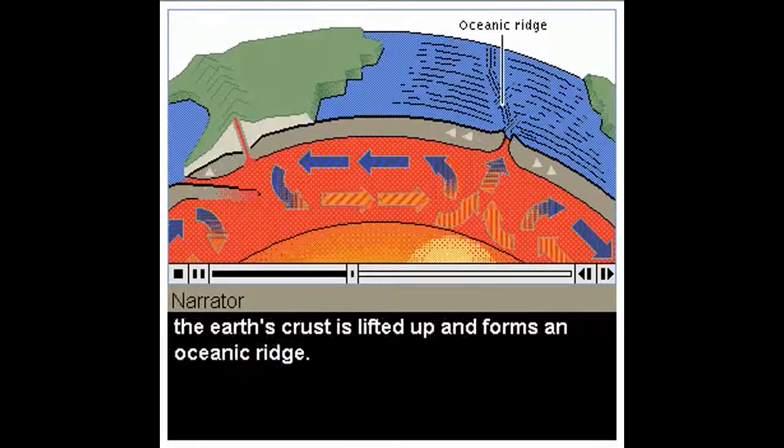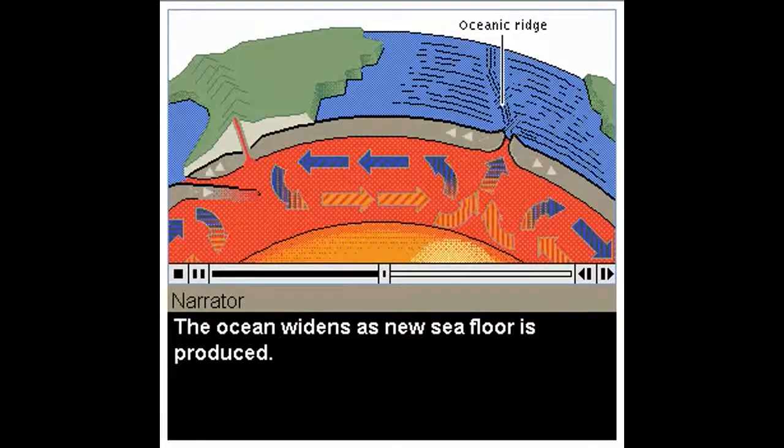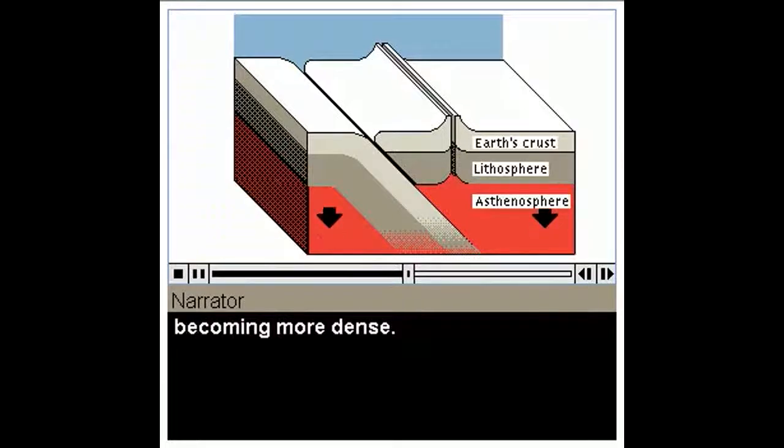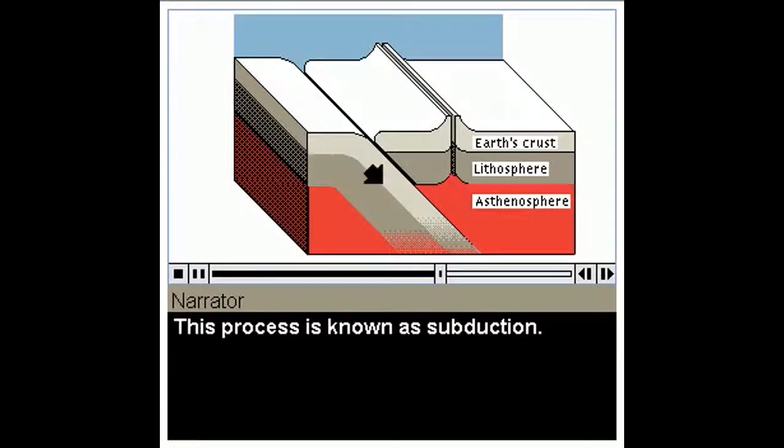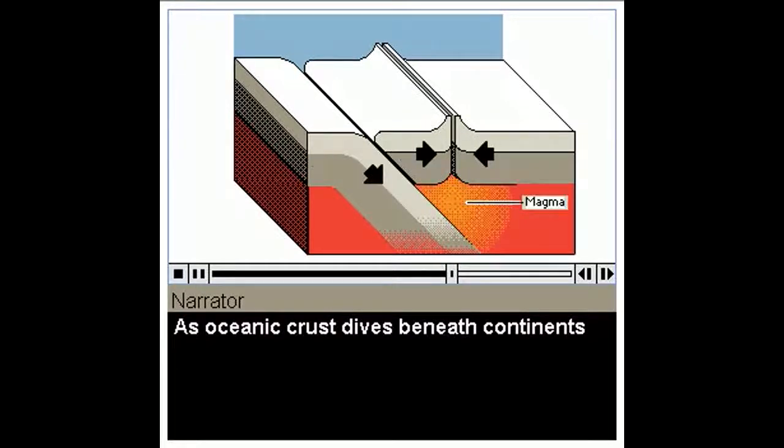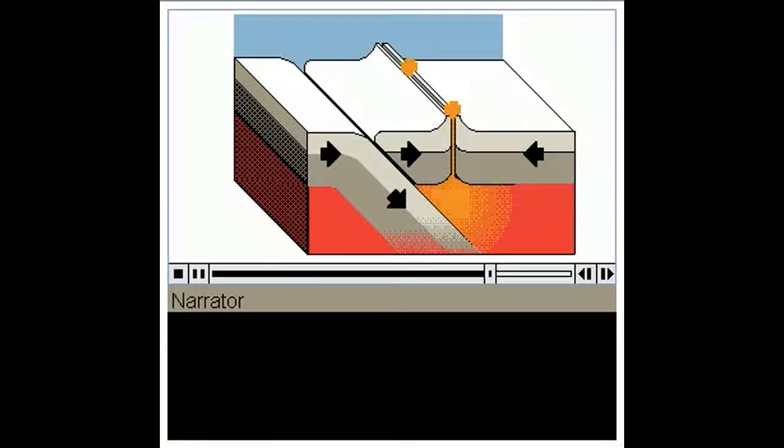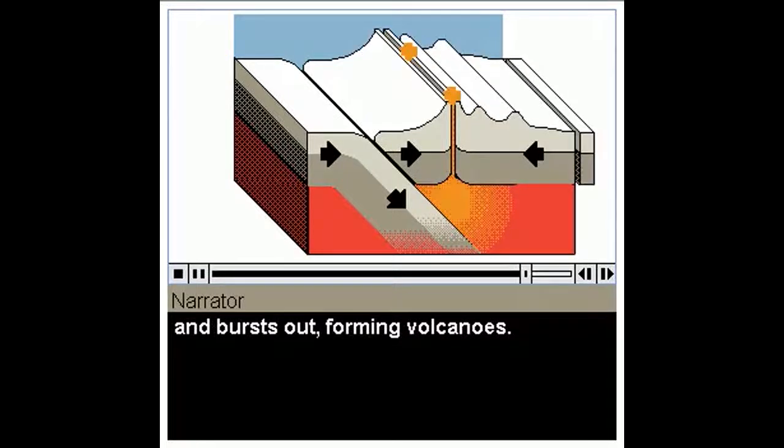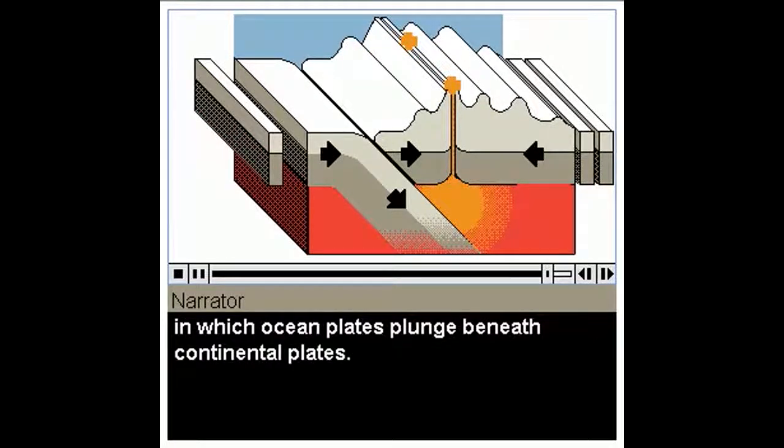If the heating occurs beneath an ocean, the earth's crust is lifted up and forms an oceanic ridge. The ocean widens as new seafloor is produced. Material in the asthenosphere eventually cools, becoming more dense. It then sinks, carrying parts of the lithosphere with it. This process is known as subduction. As oceanic crust dives beneath continents, it melts, forming liquid rock or magma. Sometimes this magma seeps to the surface and bursts out, forming volcanoes. Most volcanoes of the world lie along zones in which ocean plates plunge beneath continental plates.